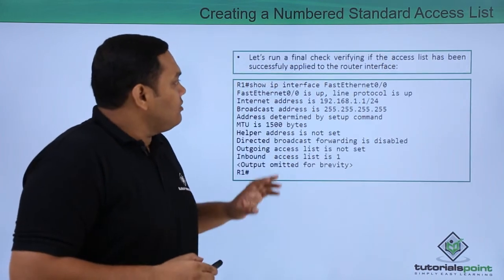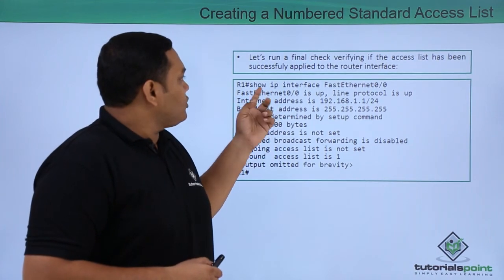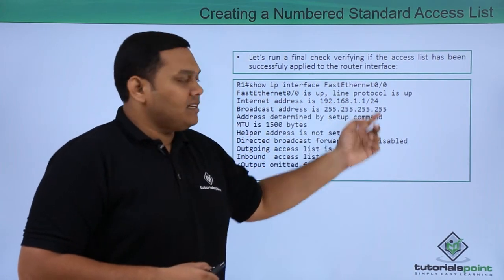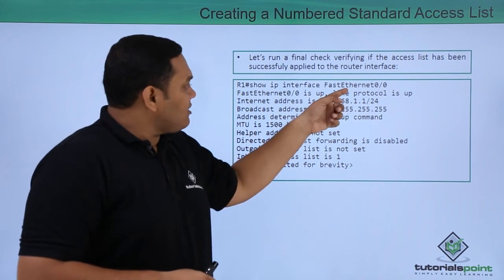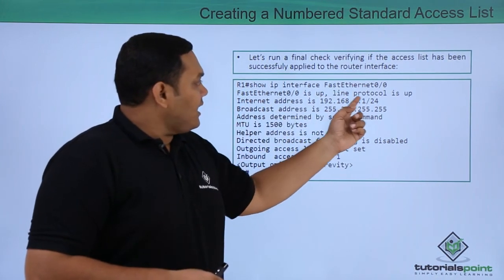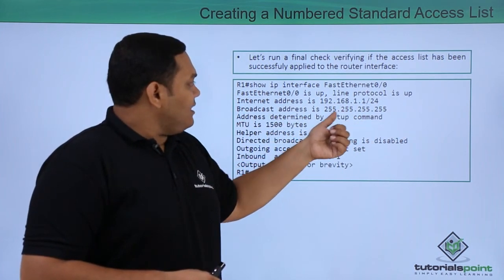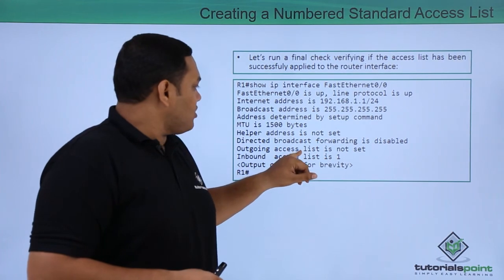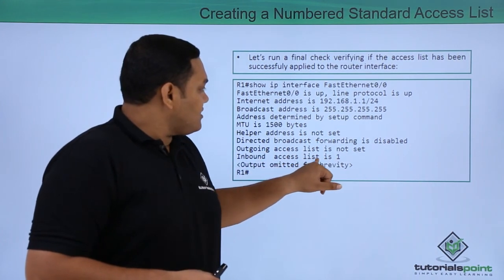To verify everything is up and running, use 'show ip interface FastEthernet 0/0.' This shows the interface is up, line protocol is up, the internet address is set, the outbound access list is not set, and the inbound access list is 1.